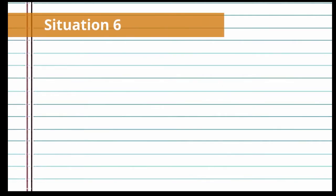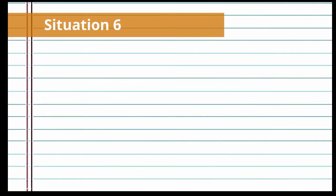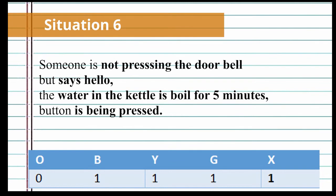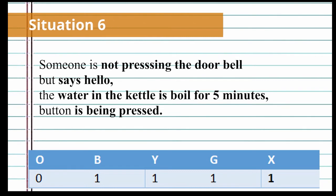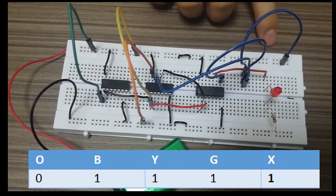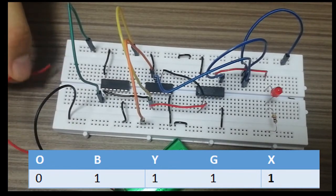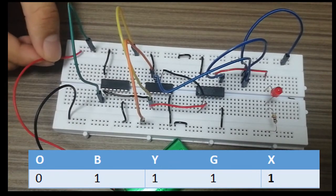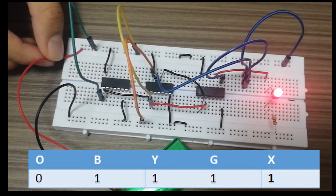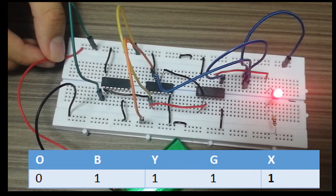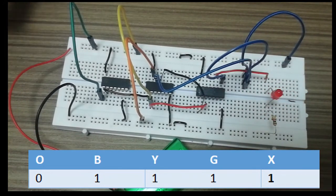For the last situation, when someone is not pressing the doorbell but says hello, and the water in the kettle is boiling for 5 minutes and the button is being pressed — G, Y, and B are connected to high while O is connected to low. When we connect our battery, we will see the LED will also light up, which matches our truth table.